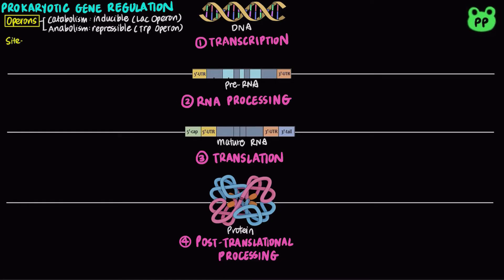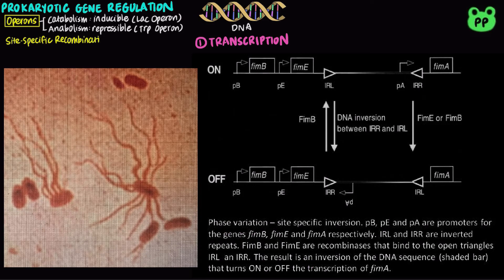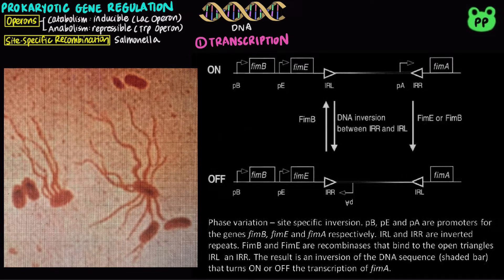Another mechanism in the regulation of prokaryotic transcription involves site-specific recombination, which is found in the bacteria Salmonella, that infects mammalian intestine. Salmonella moves by rotating flagella on its cell surface. They switch between two distinct flagellar proteins through phase variation to evade the host immune system.